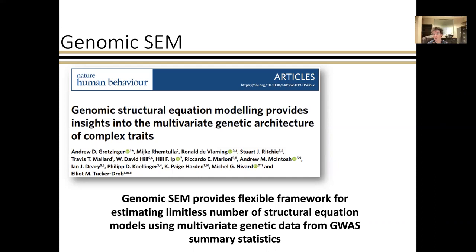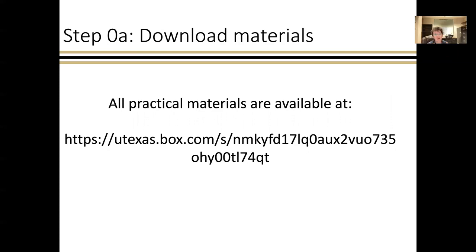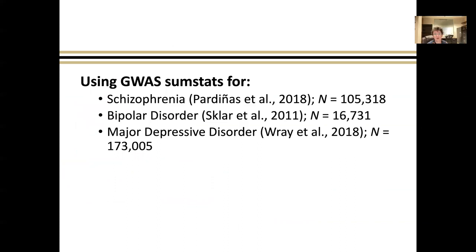The practical is split into two parts. The first is how to estimate a user-specified model using genome-wide estimates, and the second is how to incorporate the effects of individual SNPs to do things like estimate a multivariate GWAS. All practical materials are available at this box link, including an R script and all the files needed, plus code to download GenomeXem if you haven't already. Throughout, we're using GWAS summary statistics for schizophrenia, bipolar, and major depressive disorder.